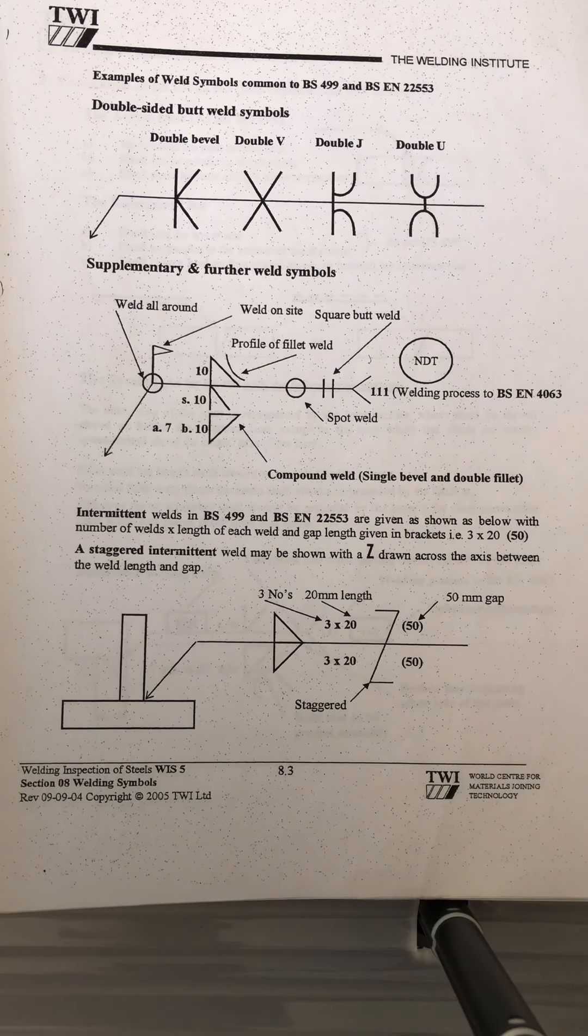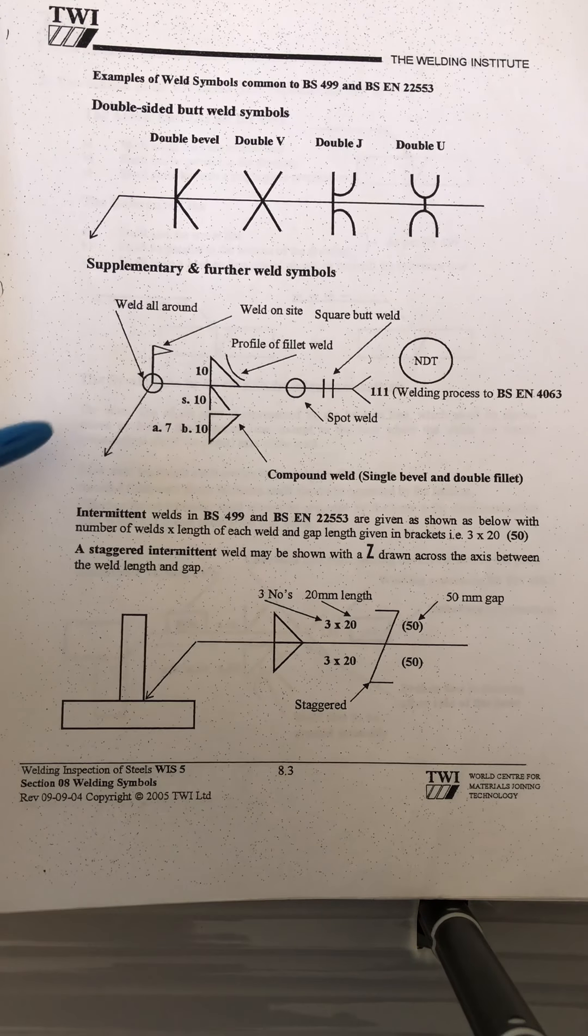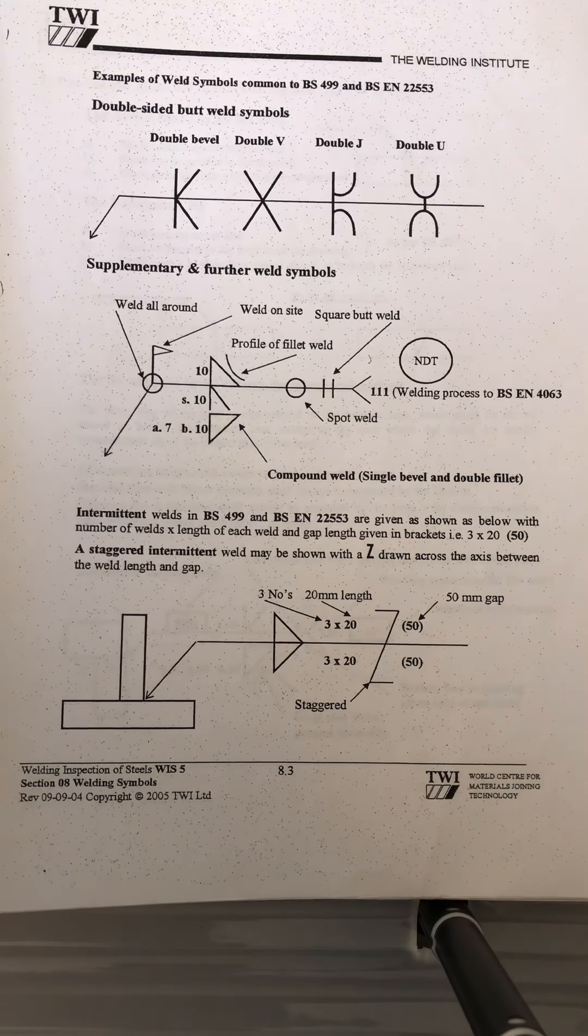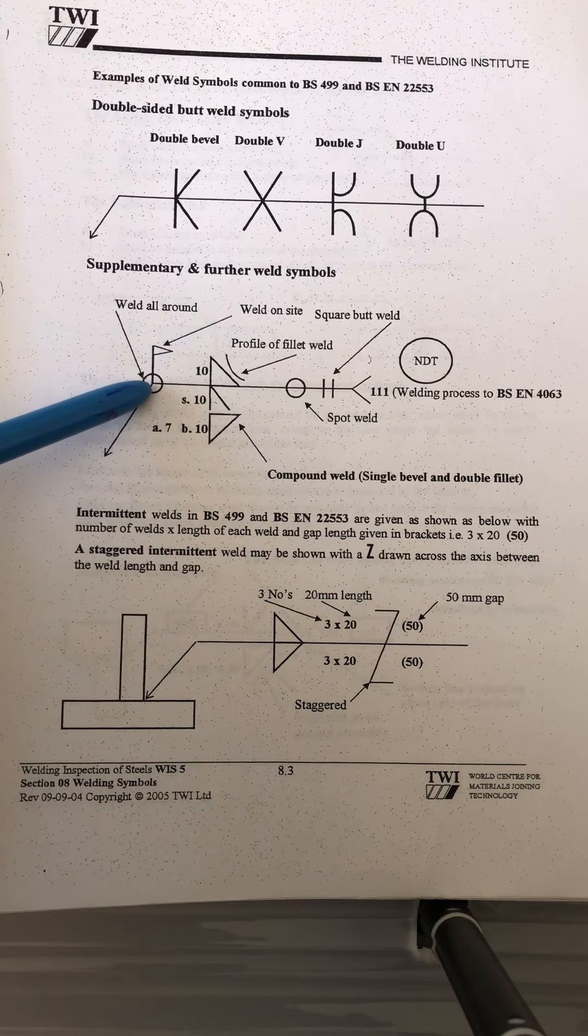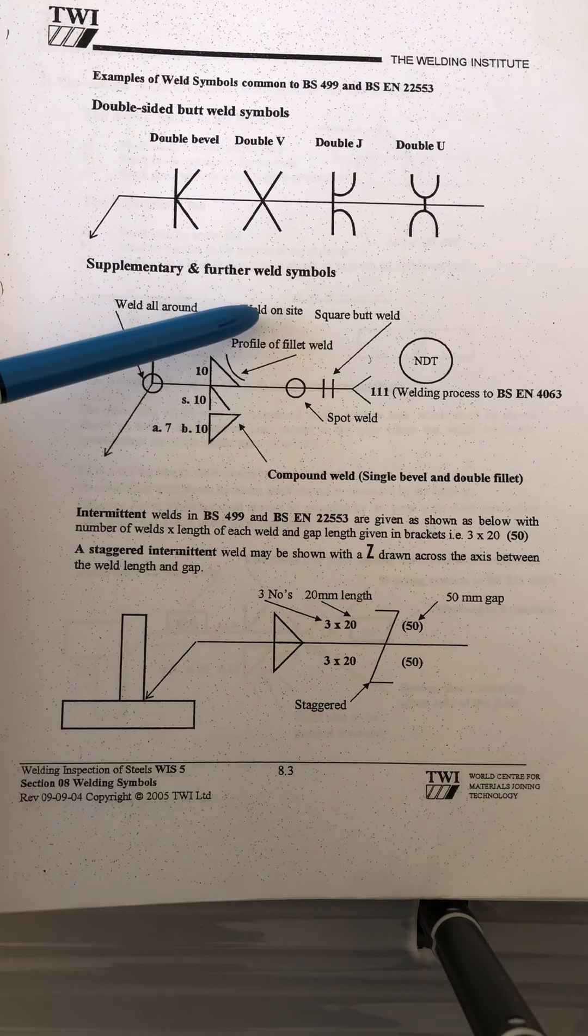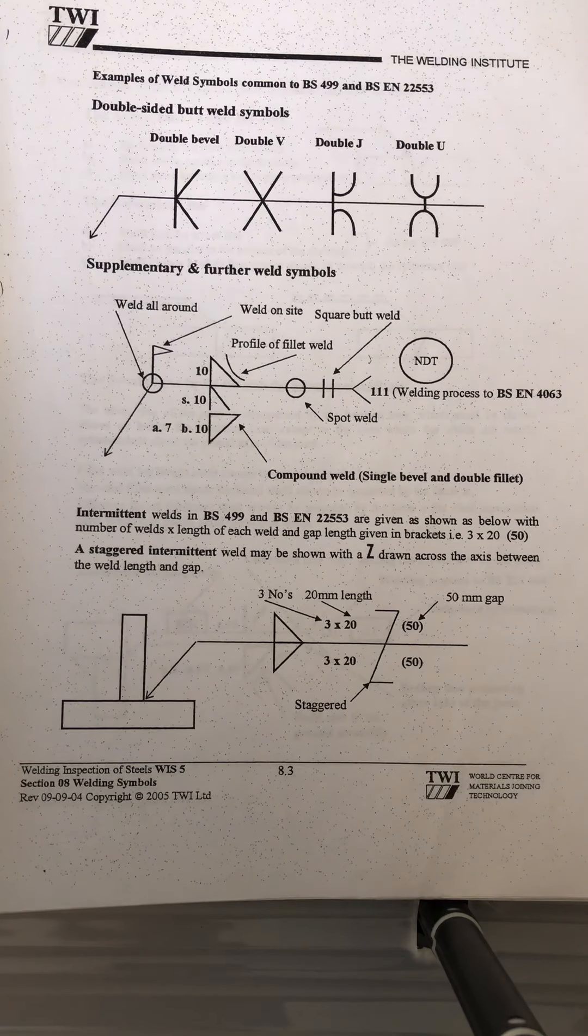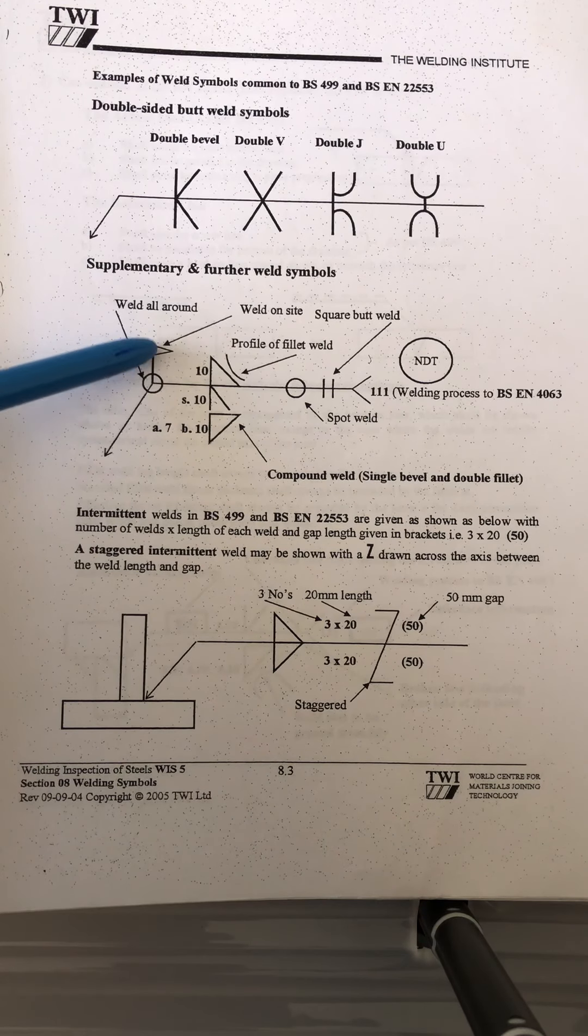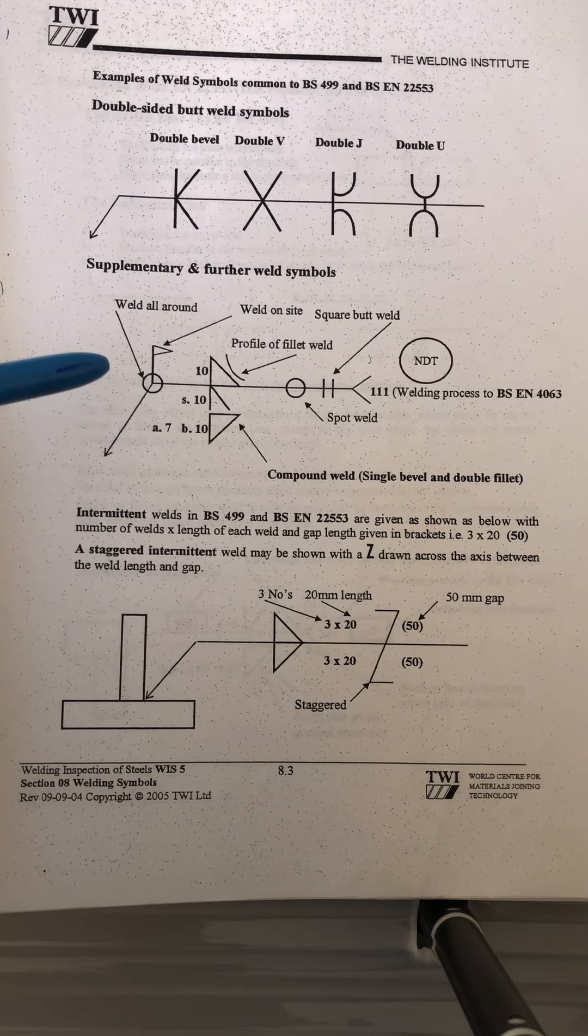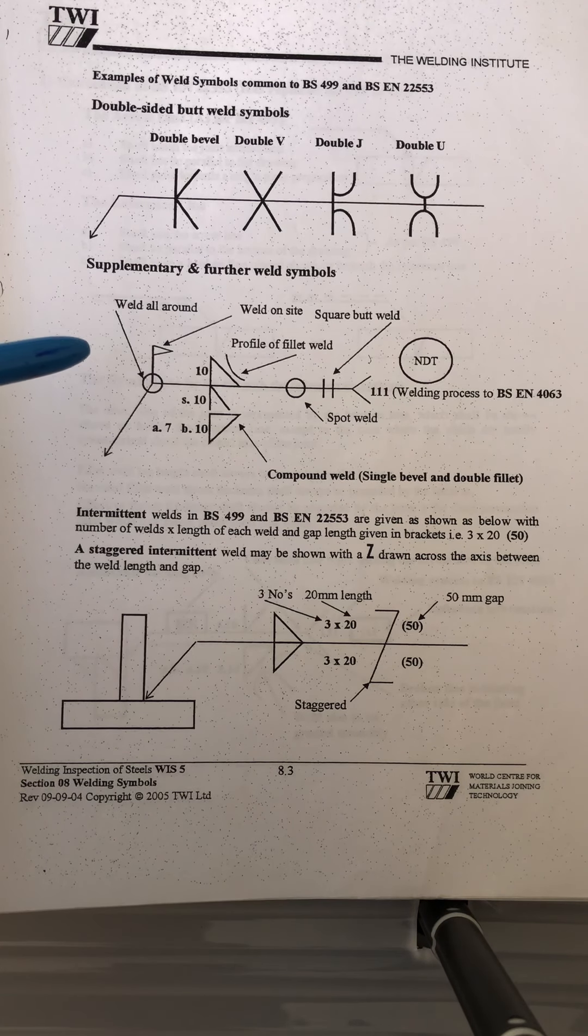Most of the isometric drawings we can see this one. This is what we call the reference line. The circle is weld all around, and this plug is weld on site. Whenever you see this one, don't weld because that one needs to be welded on site for adjustment, for process, and for pickup.